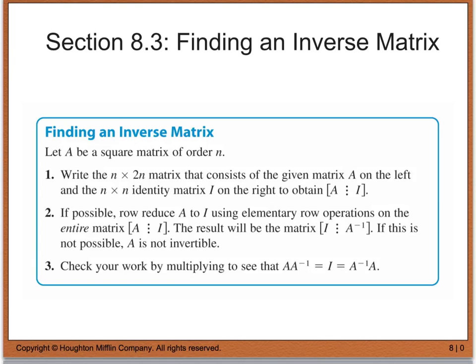Your textbook gives the definition for working problems out by hand: let matrix A be a square matrix of order n. We write the n by 2n matrix that consists of the given matrix on the left and the n by n identity matrix on the right — like an augmented matrix, with the coefficient matrix on one side and the identity matrix on the other. Then if possible, we row reduce matrix A to I using elementary row operations on the entire matrix. Anything done to the matrix A side must also be done on the identity matrix side. The result gives us the identity matrix on the left and the inverse matrix on the right.